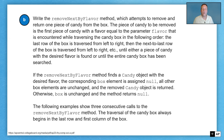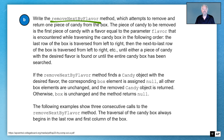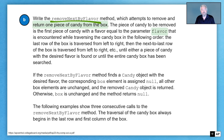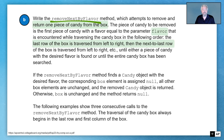Now let's look at part B — the removeNextByFlavor method. It attempts to remove and return one piece of candy from the box. The piece of candy to be removed is the first piece with a flavor equal to the parameter flavor. Importantly, the traversal order is different: we start in the last row of the box first and go from left to right, then the next-to-last row from left to right, and so on — bottom to top, left to right. We traverse until either a candy with the desired flavor is found or the entire box has been searched.